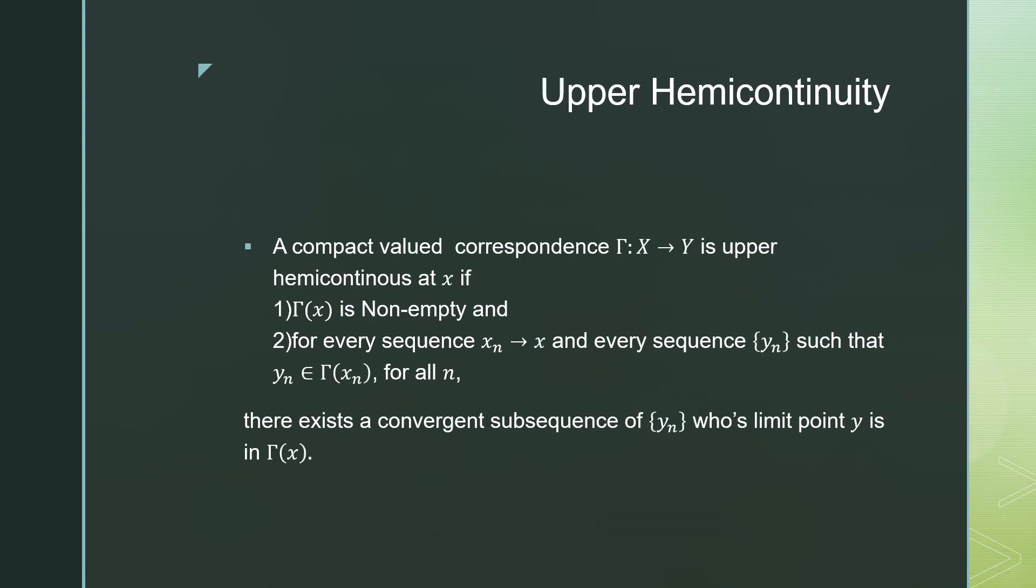In terms of defining upper hemicontinuity, which is important for our definition, a compact valued correspondence Γ: X → Y is upper hemicontinuous at x if Γ(x) is non-empty and for every sequence x_n which goes to x, we have that sequence.